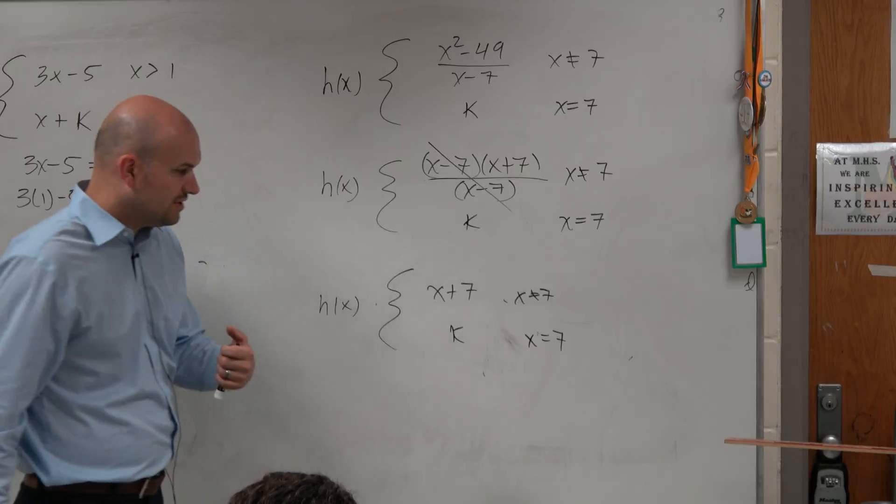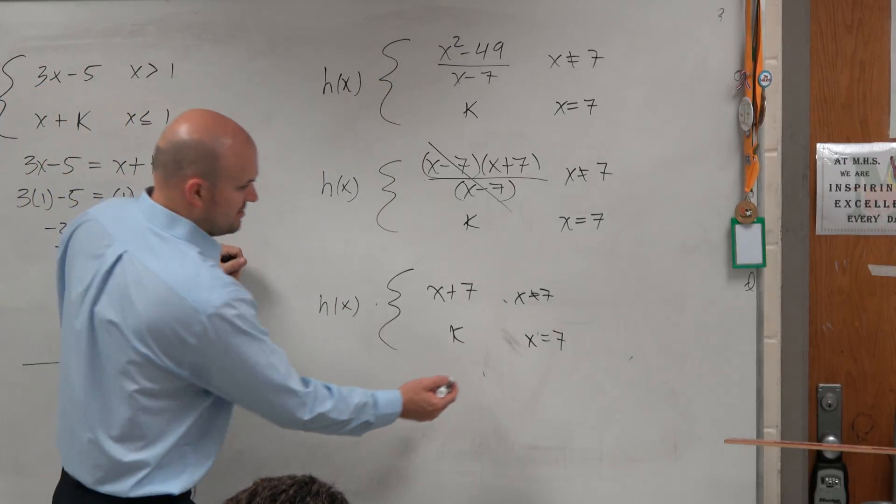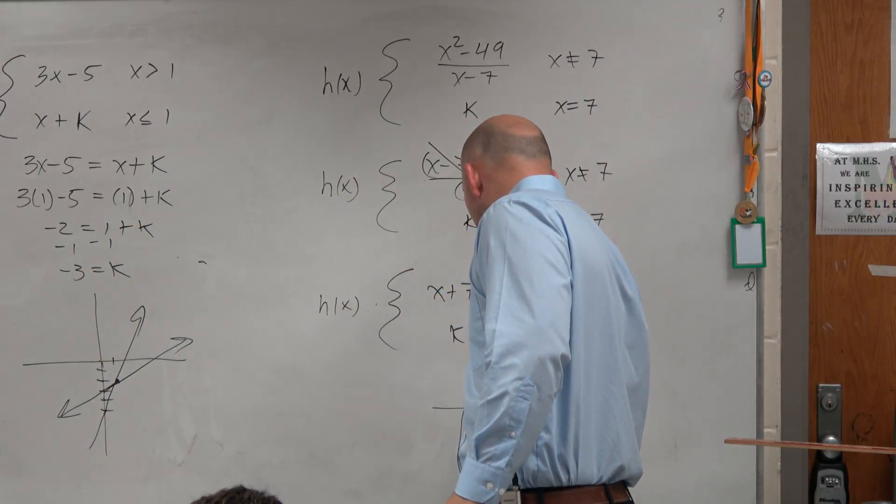So just like we did before, guys, what this graph, what this looks like, you guys want to see what that graph looks like? It's x plus 7, counting 1, 2, 3, 4, 5, 6, 7.